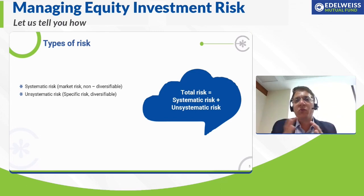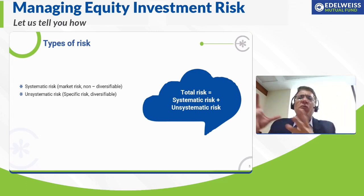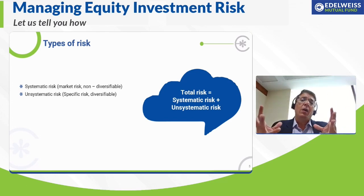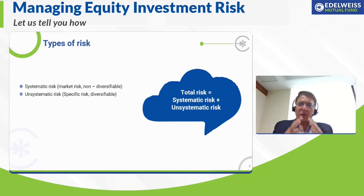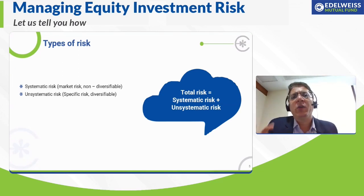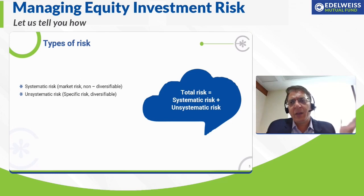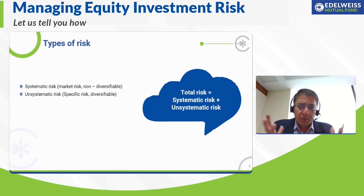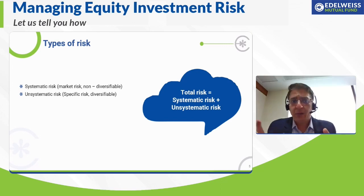By diversifying your investments across various equity schemes, you are able to spread and manage specific security and scheme risks. If the market breadth is moving forward, a diversified investment gives a probability that you'll move in the direction of the markets. But if you invest in only one scheme and there is a specific problem with it, even if markets move up, that scheme may not perform well or may even perform negatively. That's a specific risk, avoided through diversification.